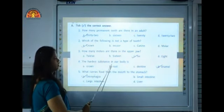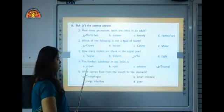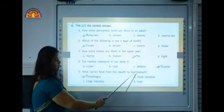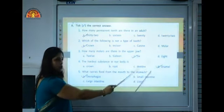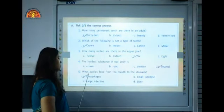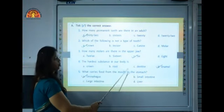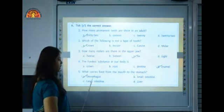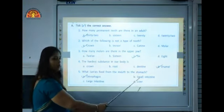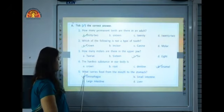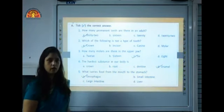The hardest substance in our body is: crown, root, dentine, enamel. So enamel is the correct answer. Put a tick mark on enamel. What carries food from the mouth to the stomach? Esophagus, small intestine, large intestine or liver. So the correct answer is esophagus. Put a tick mark on esophagus.